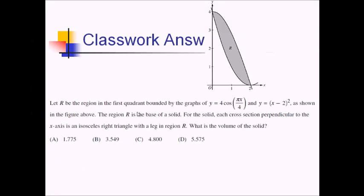On this problem, we're given region R bounded by 4 cosine of pi x over 4 — that's the top curve — and y equals x minus 2 squared, which is the parabolic bottom curve, a parabola shifted right 2. R is the base of a solid. Cross-sections perpendicular to the x-axis are isosceles right triangles with a leg in region R. We want the volume.